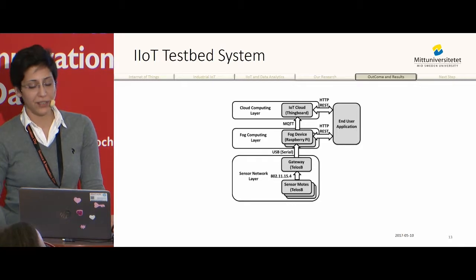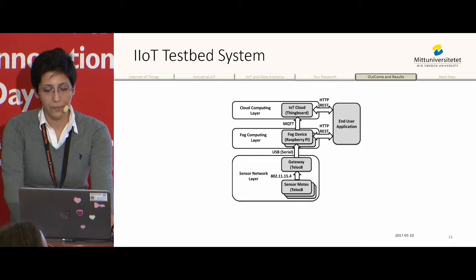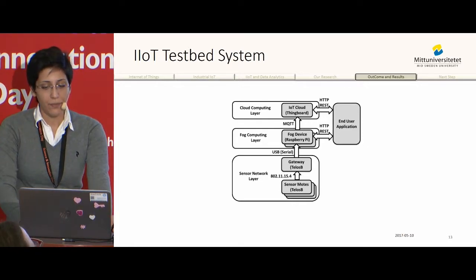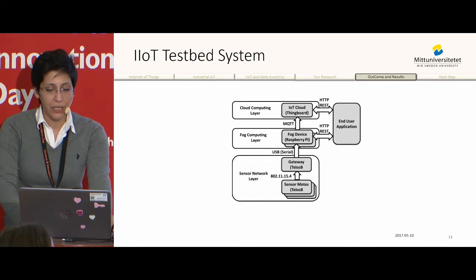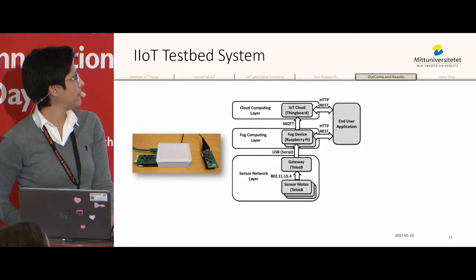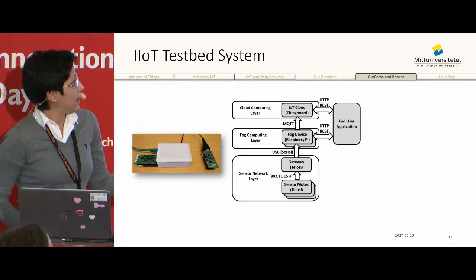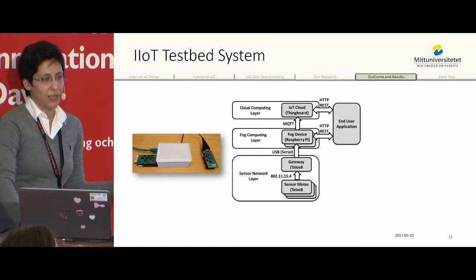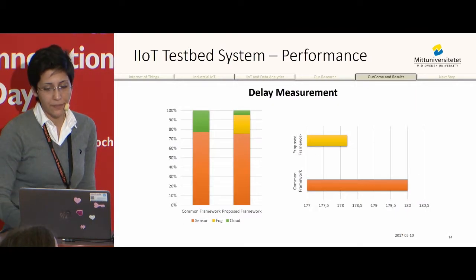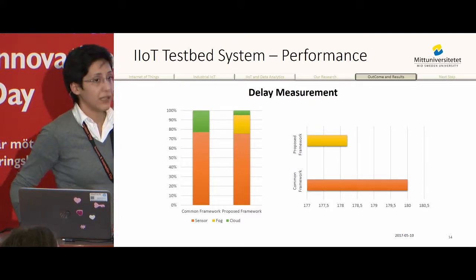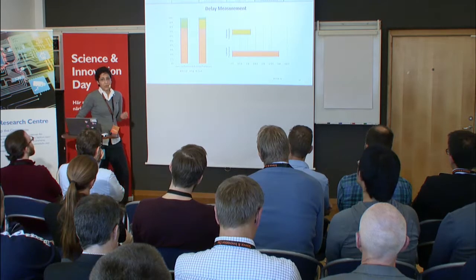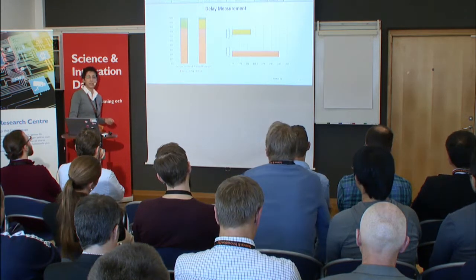To test our framework, we also developed an IoT testbed system and tested the performance of our methods and learning models in a more realistic scenario. Each layer was implemented using relevant technologies: we used TelosB motes to implement the sensor network layer, Raspberry Pis to implement the fog computing layer, and we also developed an end-user application showing the differences happening in the system. The results showed the system was working as expected, and even in our setup where the fog and cloud were on the same local network, delay was reduced by at least 4%, which can be improved further in the future.